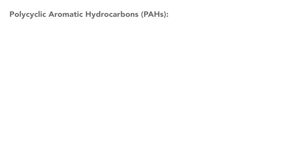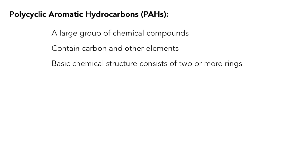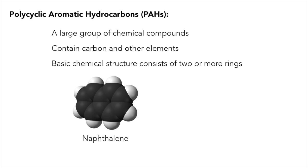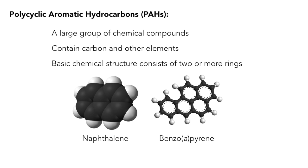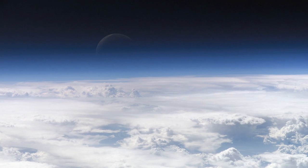Let's begin with what are PAHs. Polycyclic aromatic hydrocarbons is a mouthful, so I'll keep referring to them as PAHs. Basically, they are a large group of chemical compounds that contain carbon as well as other elements. The basic structure of a PAH has two or more rings, ranging from the relatively simple compound naphthalene to much larger and more complicated compounds like benzo[a]pyrene. There are hundreds of different PAHs, but we only have good information on just a few of them.